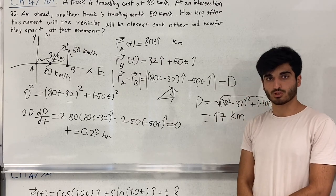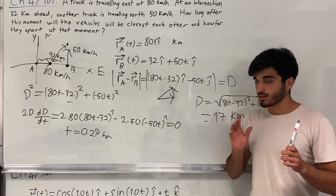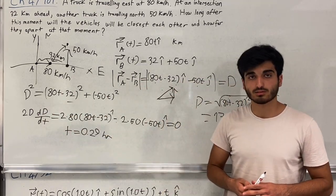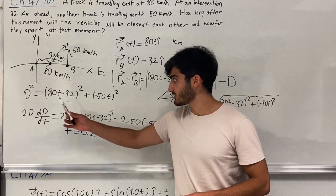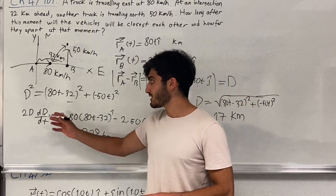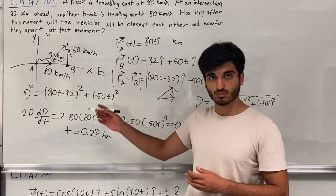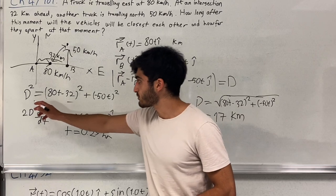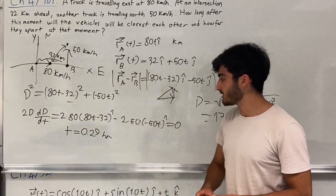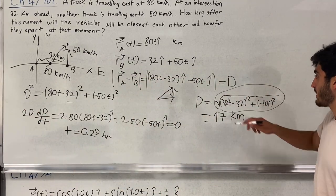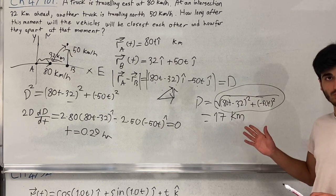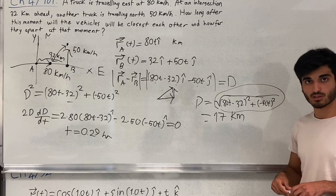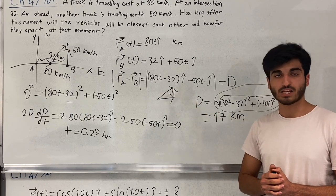Thank you for watching. I want to explain why I used D² instead of D for the derivative. The result is not affected — minimizing D² gives the same answer as minimizing D — but taking the derivative of D directly requires differentiating a square root function, which is much harder. So taking the derivative of D² is simpler. Thank you.